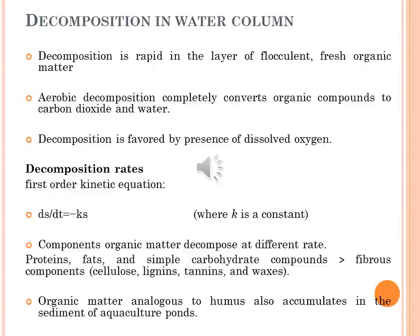The decomposition rate is most simply described using a first-order kinetic equation: dS/dt = −KS, where K is a constant dependent on environmental factors. When organic matter decomposes, its components do not decompose at the same rate. Proteins, fats and simple carbohydrate compounds decompose faster than fibrous components such as cellulose, lignin, tannins and waxes. The majority of an organic residue will decompose within a few weeks or months, but some material will persist for years. The microorganisms of decay secrete organic compounds, and when they die they become organic matter. The excretion of organic microorganisms and resistant remains of decomposing organic matter form large complex molecules of humic substances known as humus.